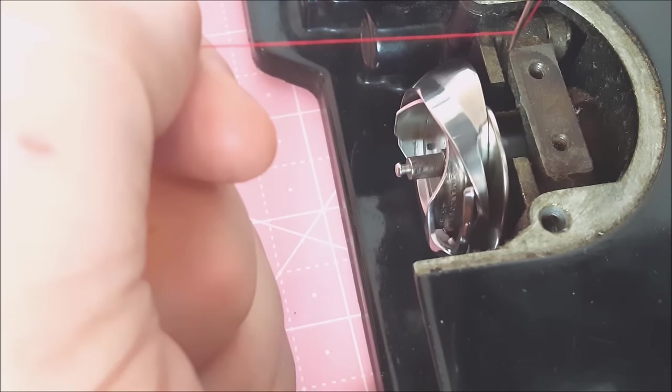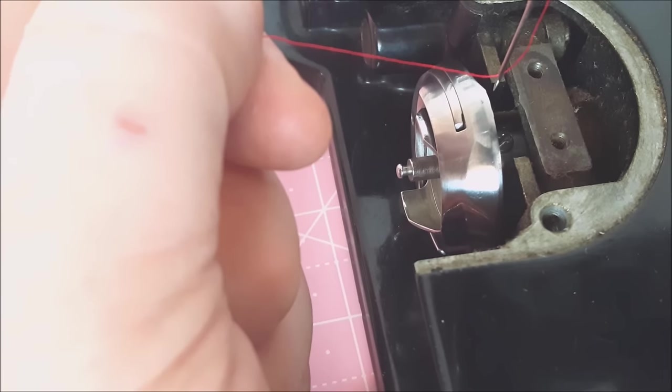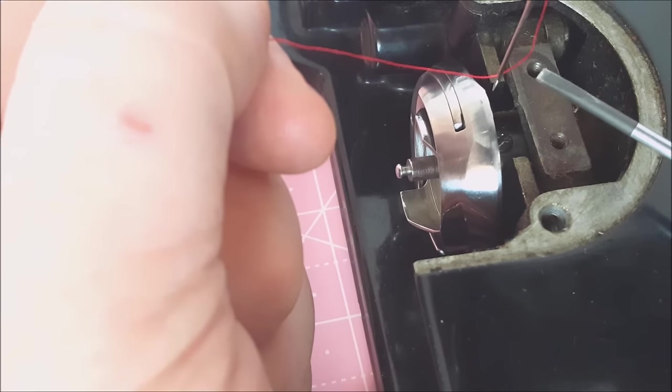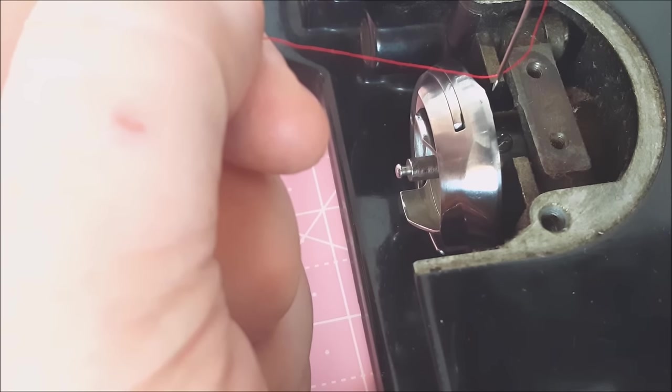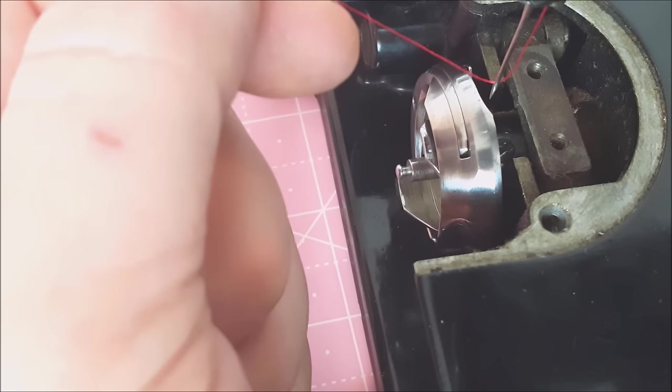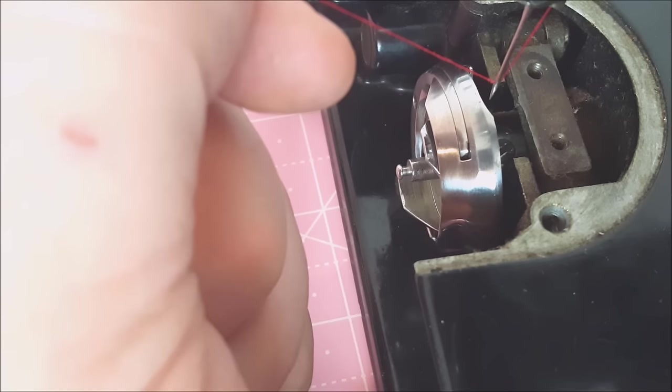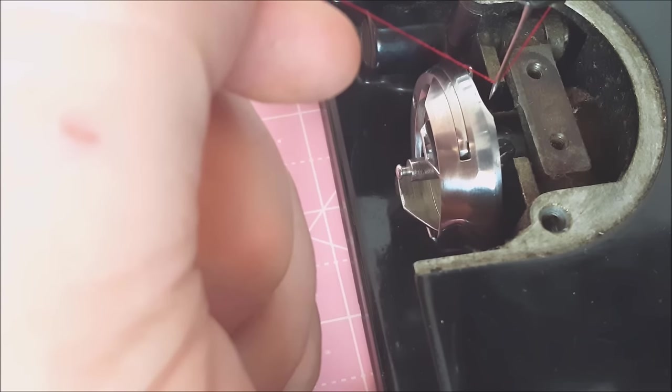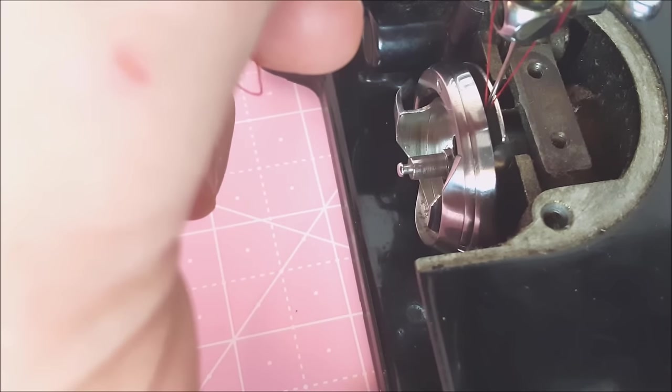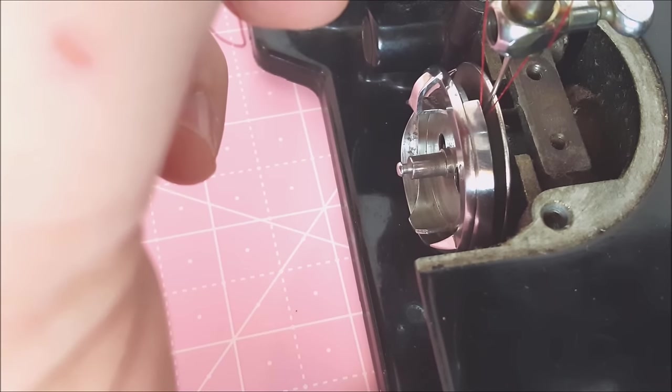We have the needle here. It is threaded and an important thing is that the thread is from right to left, from inside out. Now when the needle plate is on the machine and there's tension on this thread, when it goes down, as it goes down through the hole in the needle plate, it reaches a very bottom point.